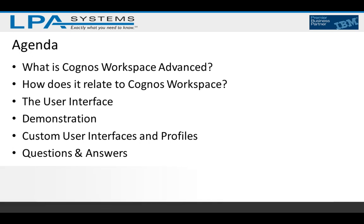First of all, we're going to talk about just what is this Cognos Workspace Advanced tool — you'll hear me call it CWA throughout this presentation — and how does it relate to Cognos Workspace. We'll talk about the user interface, and then spend the bulk of our time with me using CWA to write some reports, so you get a notion of its functionality versus tools like Query Studio or Report Studio. Then we'll talk about something introduced in the 10.2.2 release called Custom User Interfaces and Profiles, and I'll do a quick demonstration of that, with hopefully some time for questions at the end.